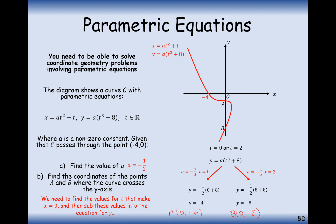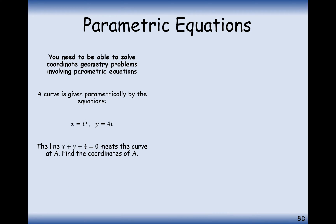That's how we answer that type of question. If the point is on the x or y axis, set the other coordinate equal to zero. You may need to work out the t value first and then use the other equation to find the x or y coordinate.